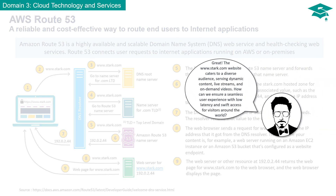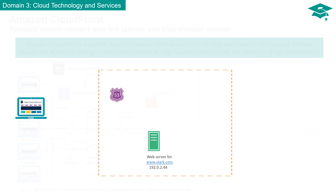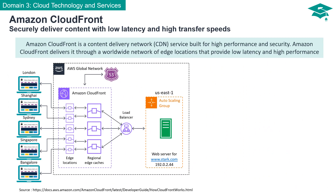The www.stark.com website caters to a diverse audience, serving dynamic content, live streams, and on-demand videos. How can we ensure a seamless user experience with low latency and swift access for visitors around the world? Amazon CloudFront is a content delivery network service built for high performance and security. Amazon CloudFront delivers content through a worldwide network of edge locations that provide low latency and high performance.